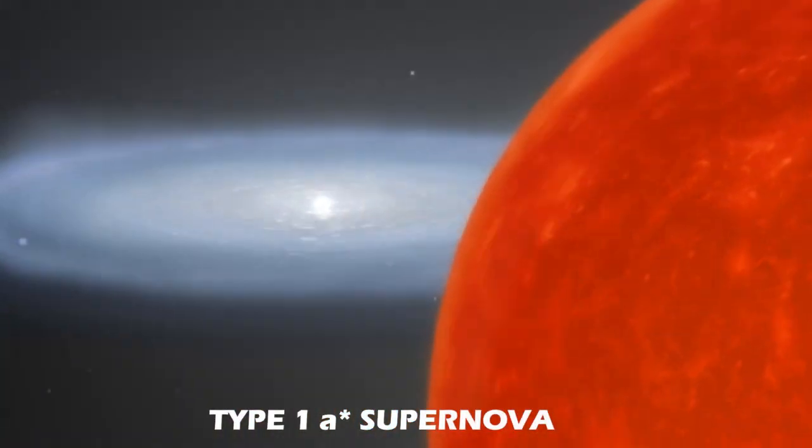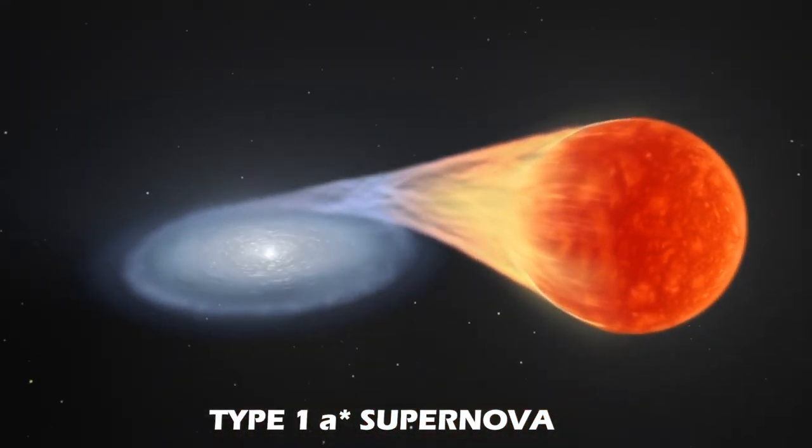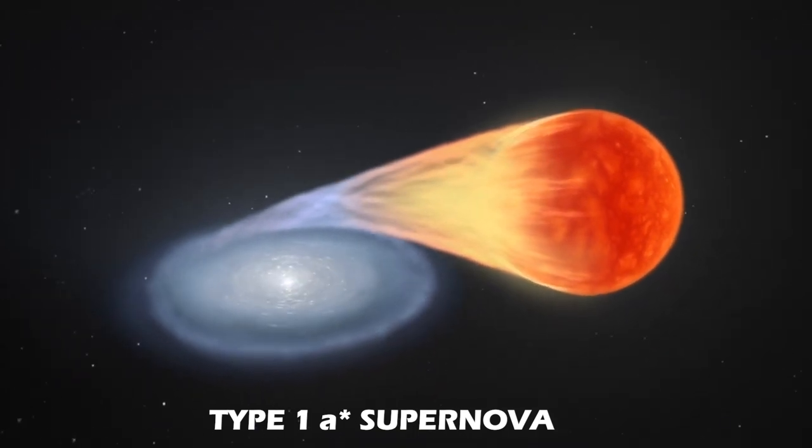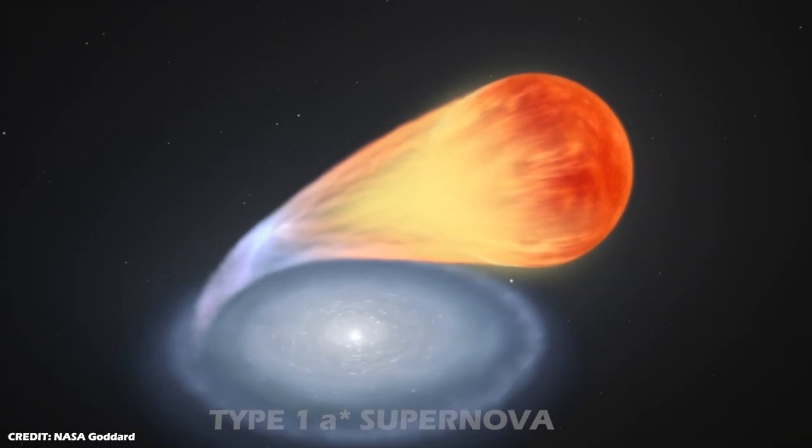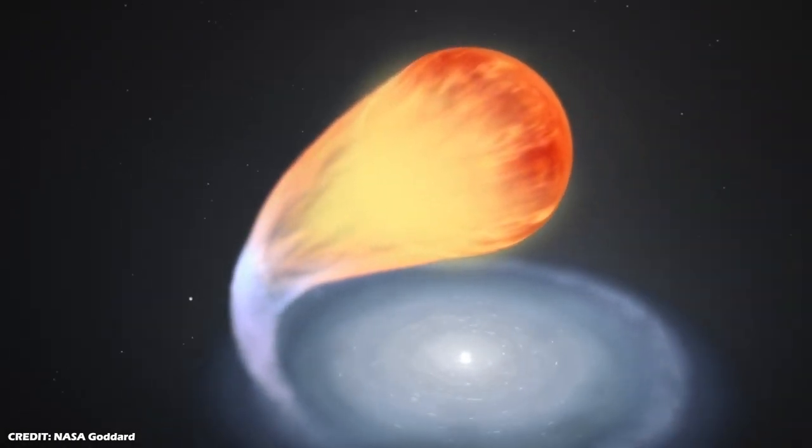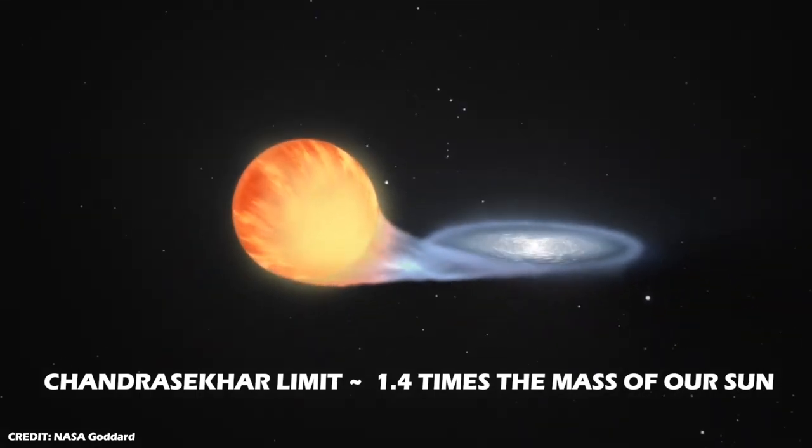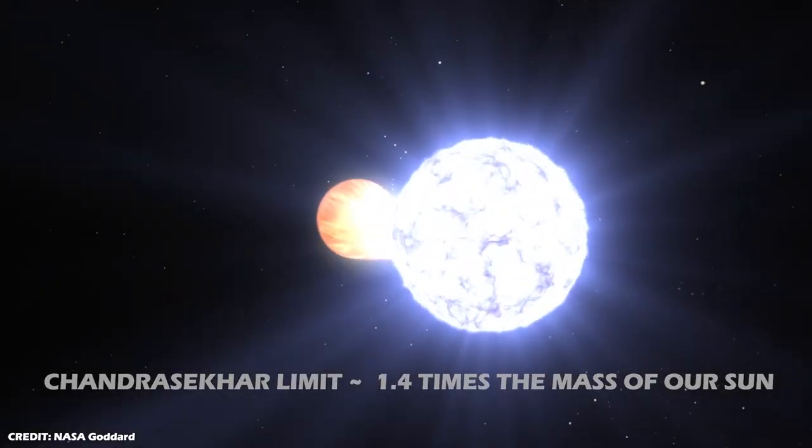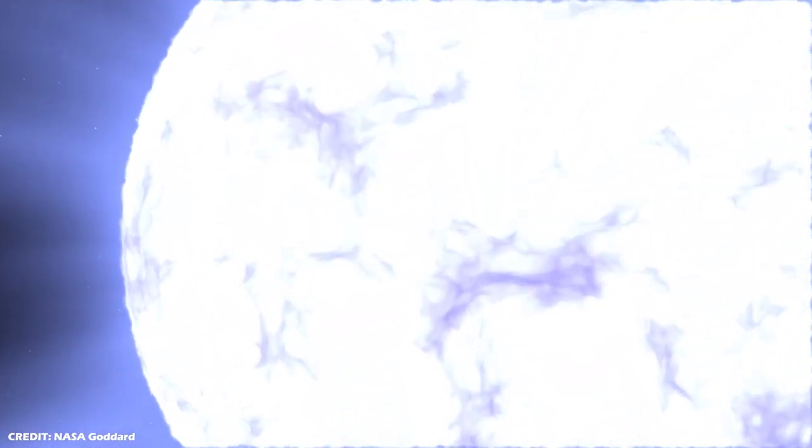The other is a Type 1 supernova, which happens when the remnant of a sun-like star called a white dwarf accretes material from a nearby companion. Matter piles up on the surface of the white dwarf until it reaches its stable limit, called the Chandrasekhar limit, which is 1.4 times the mass of our sun. Once the white dwarf crosses this limit, a runaway thermonuclear explosion rips the white dwarf apart, leaving nothing behind.